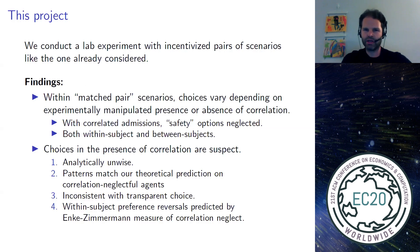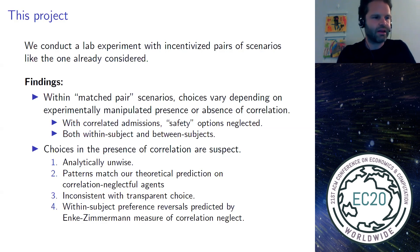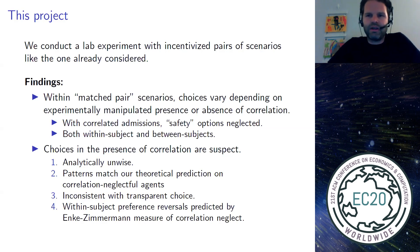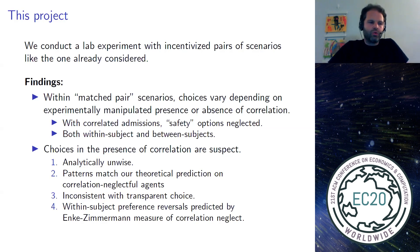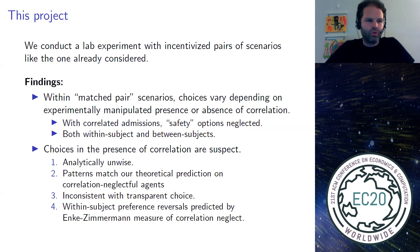In this project, we conducted a laboratory experiment with incentivized pairs of scenarios just like the ones we just saw. What we find is that agents' choices across pairs of scenarios systematically vary. Specifically, when chances are correlated, safety options are typically neglected — applicants apply more aggressively when admission chances are correlated. This holds both within and between subjects.